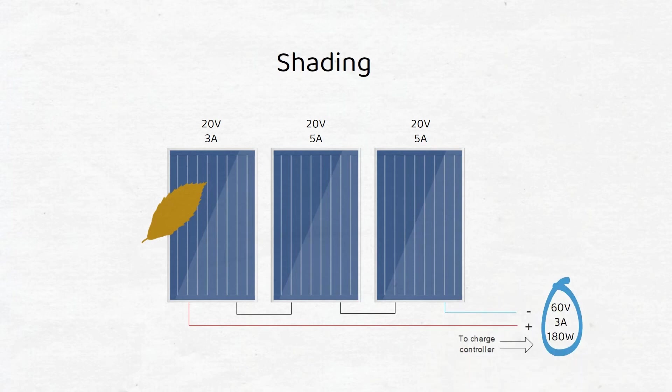In a series connection, the panel with the lowest amount of output current will be the current for all panels. The one panel will literally drag down the current of the other panels. This is why different models of panels should never be connected together, since this will limit the current, voltage, and power of the module.